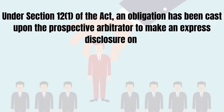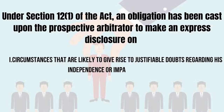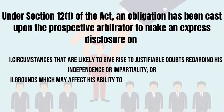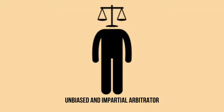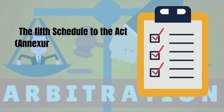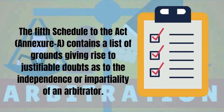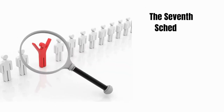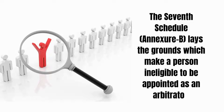Under Section 12(1) of the Act, an obligation is cast upon the prospective arbitrator to make an express disclosure on circumstances likely to give rise to justifiable doubts regarding his independence or impartiality, or grounds which may affect his ability to complete the arbitration within 12 months. The Fifth Schedule (Annexure A) lists grounds giving rise to justifiable doubts as to independence or impartiality, while the Seventh Schedule (Annexure B) lays grounds making a person ineligible to be appointed as an arbitrator.